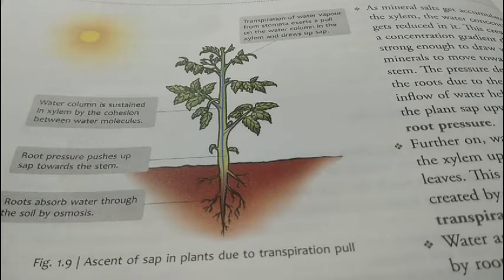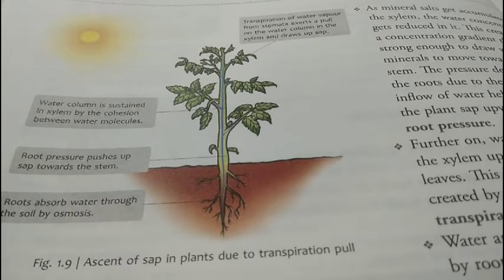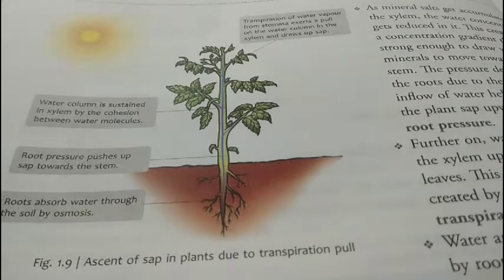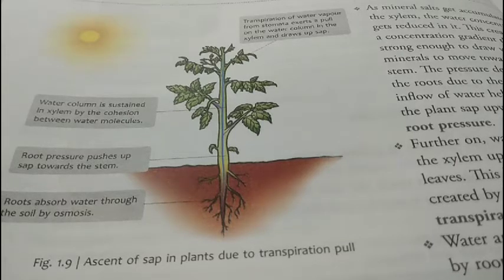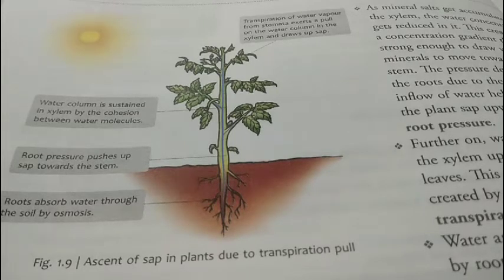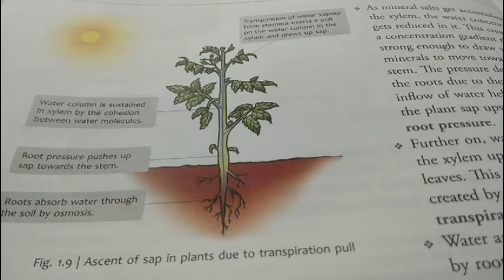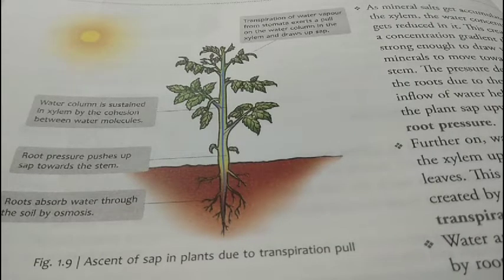First of all, the roots absorb water through the soil by the process known as osmosis. The roots absorb minerals from the soil either by the process of diffusion or by the process of active transport. Diffusion occurs when the concentration of water and minerals in the soil is higher and concentration of the cell sap in the cells of the root is low.